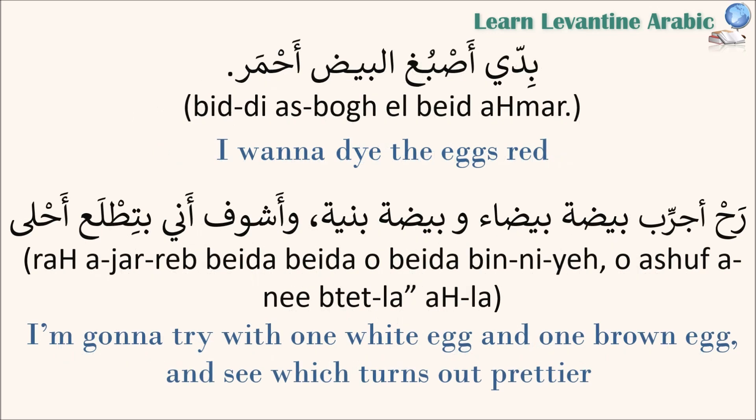بدي أصبغ البيض أحمر — I want to dye the eggs red. أصبغ means to dye, البيض means the eggs, and أحمر means red. رح أجرب بيضة بيضاء وبيضة بنية وأشوف أيا بتطلع أحلى — I will try one white egg and one brown egg and see which one turns out to be prettier.